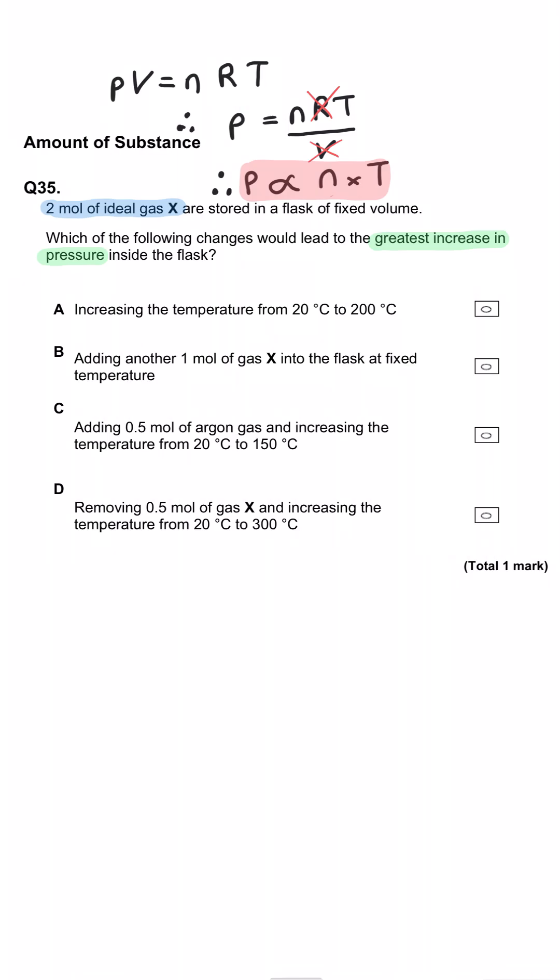And we're not interested in what the actual pressure will be. We're just interested in how many times bigger or smaller it will be. So in A, when the temperature is changing from 293 Kelvin to 473 Kelvin, that will be an increase of 473 divided by 293, which is 1.61.